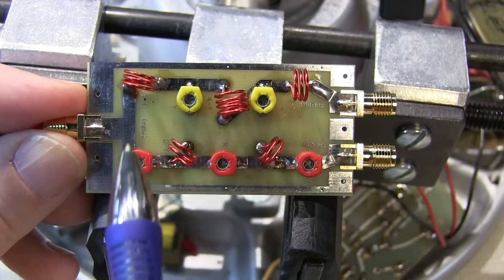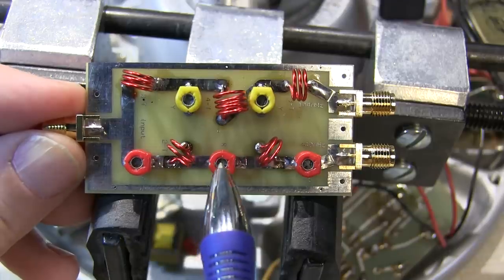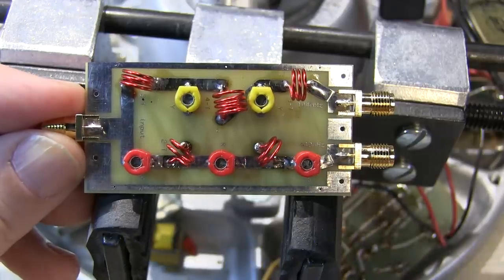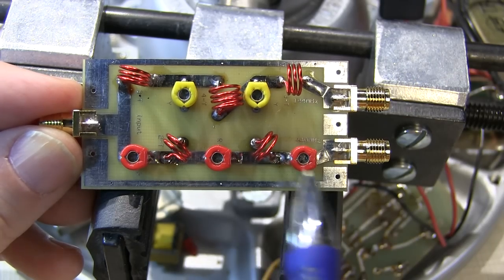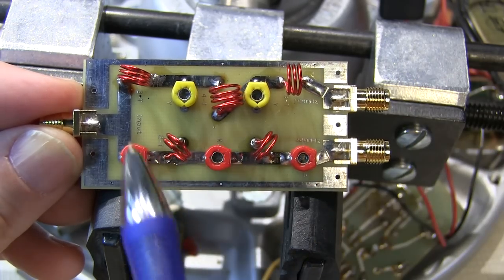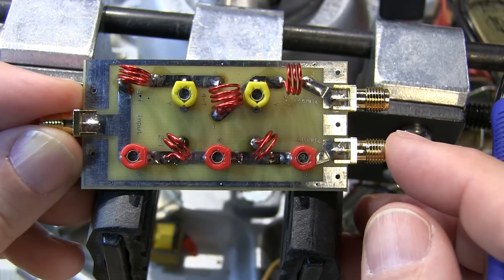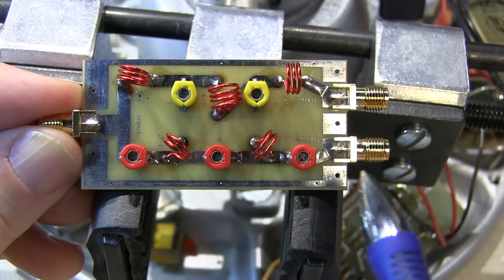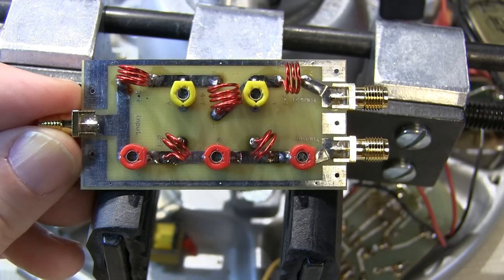The high-pass path is down here. A series cap, shunt inductor, series cap, shunt inductor, series cap. You'll notice the capacitors used in this kit are all variable. This was done so you could fine-tune the response of this filter for your own particular applications. You can see each of the inductors here are hand-wound.